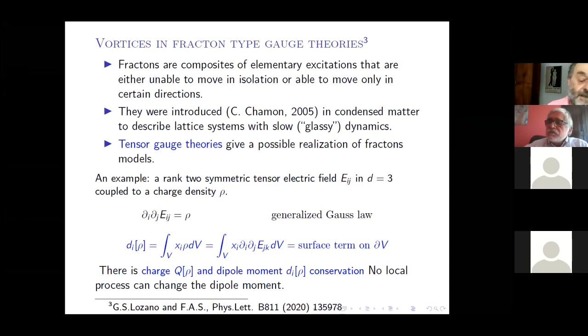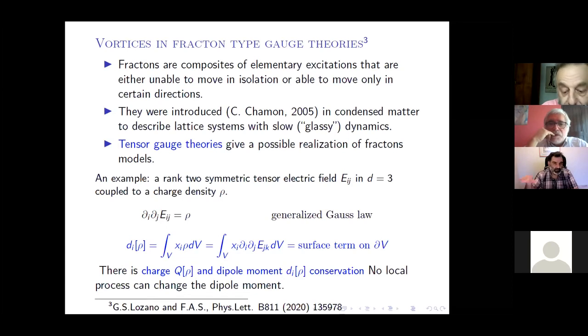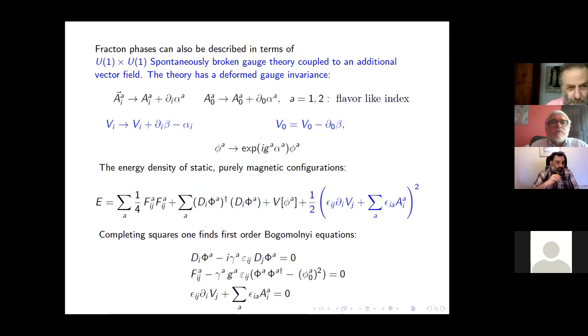They discovered that in tensor gauge theories you can have fracton configuration. For example, it's not the case I will discuss, but you see, for example, if instead of an electric field that is a vector, you put an electric field that is a tensor in three dimensions coupled to a charge density, the Gauss law, instead of being what we learned in school, is this one, which leads to conservation of charge. But you see that because of the double derivative and this tensor, you can construct a dipole. Integrate and you get just a surface term. So not only the charge but also the dipole moment are conserved. That is, no local process can change the dipole.